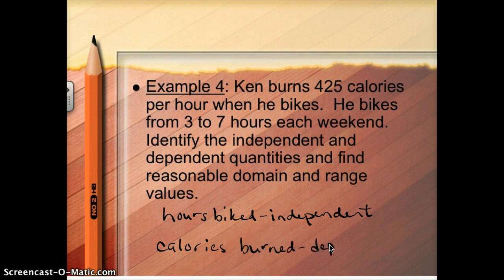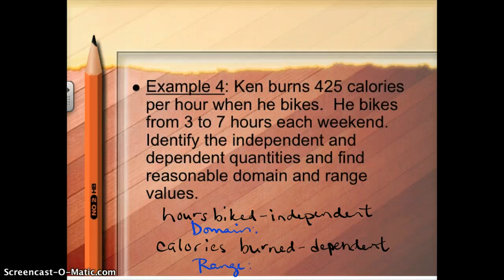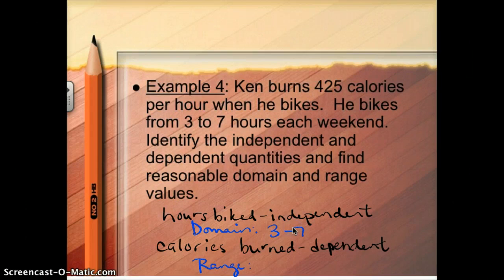Domain goes with hours biked because that's independent, and range goes with calories burned because that's dependent. When figuring out a reasonable domain value, I think about what numbers could possibly fall under hours biked. From the problem, he always bikes between three and seven hours. So the domain — the hours biked — is anywhere from three to seven hours.